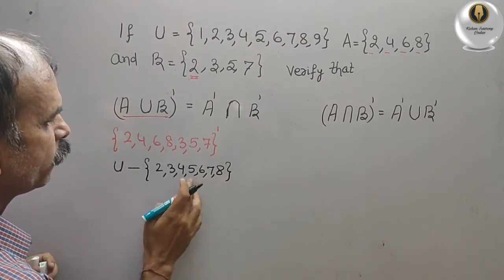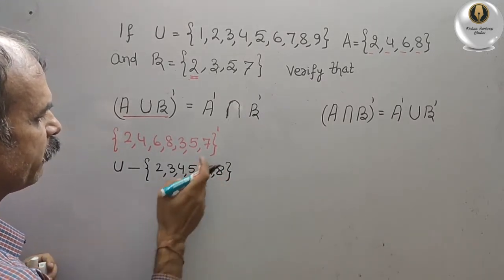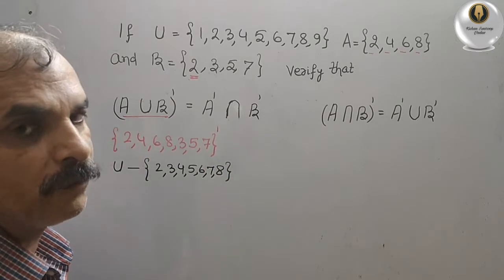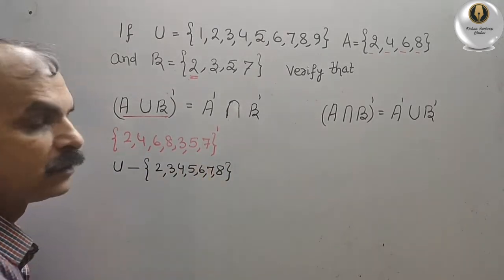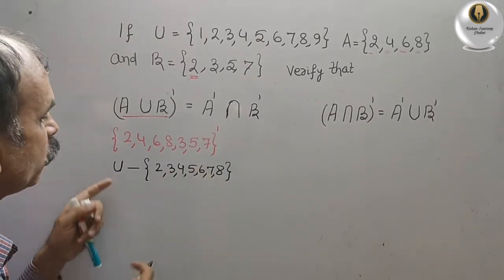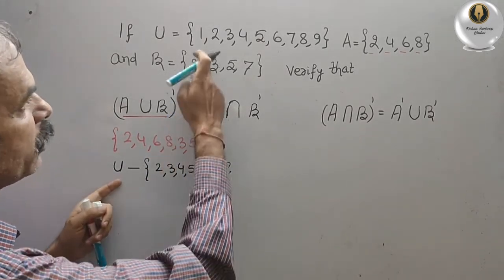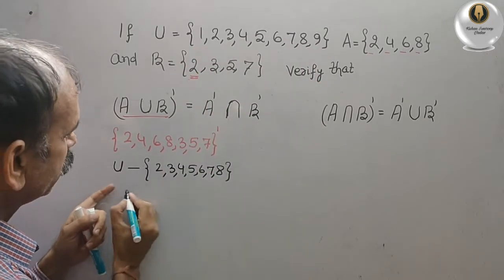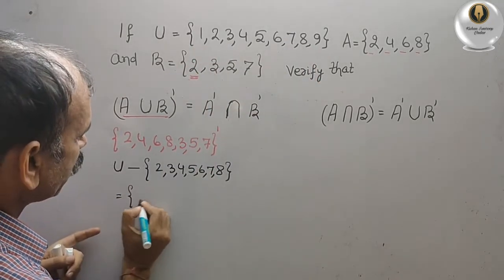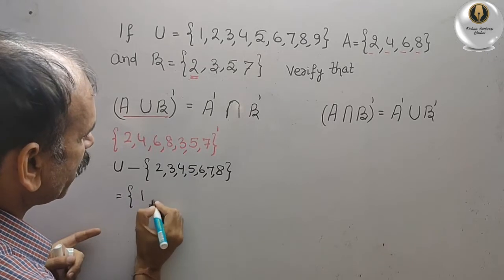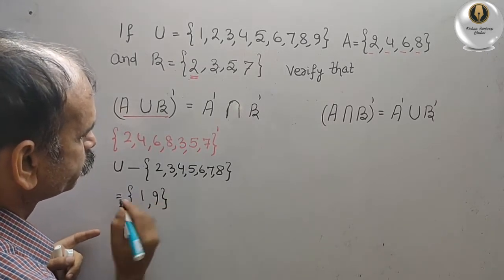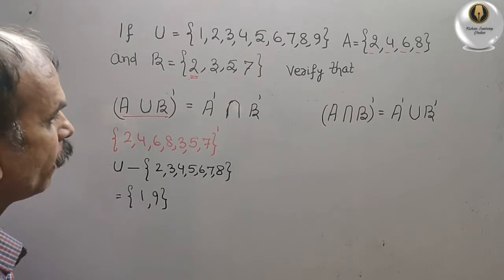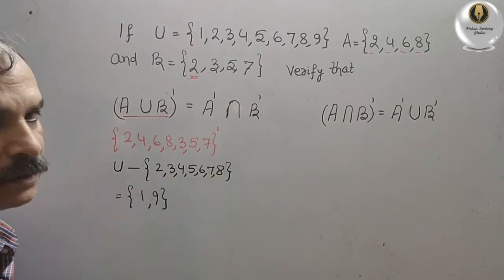U minus {2,3,4,5,6,7,8} — and we know that U is {1,2,3,4,5,6,7,8,9} — therefore what you will get is {1,9}. So this is your LHS.